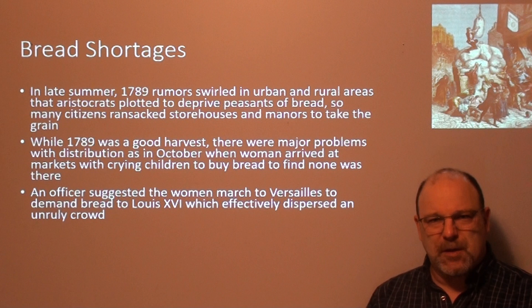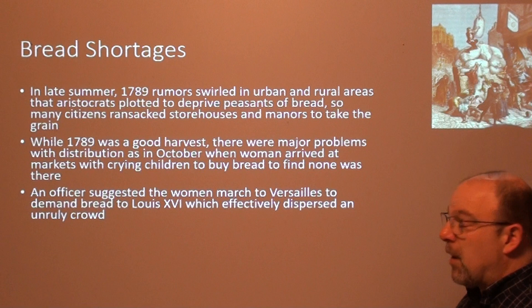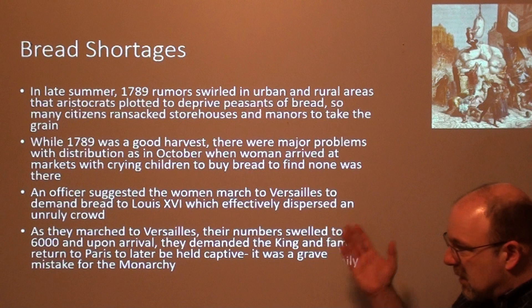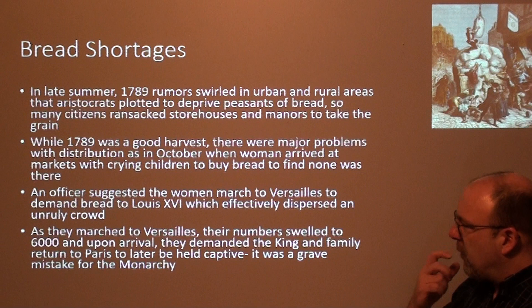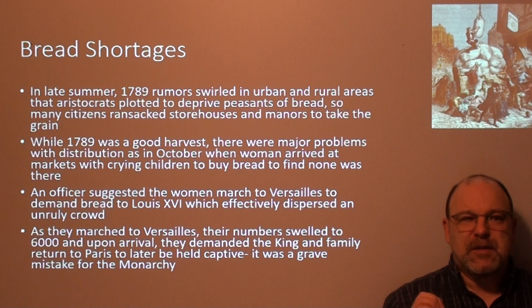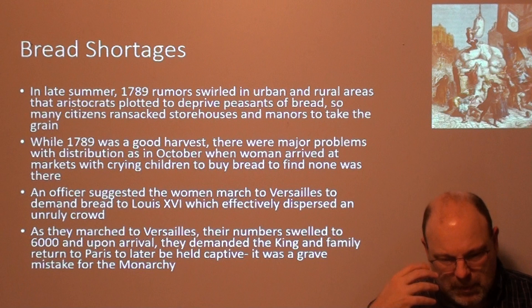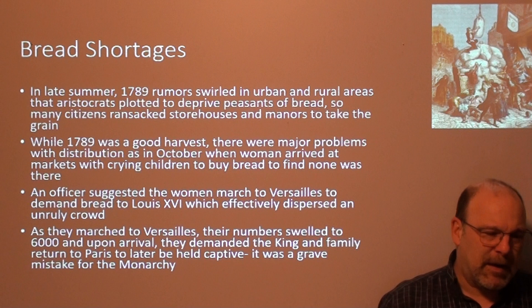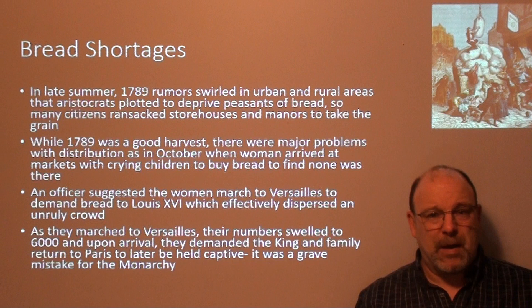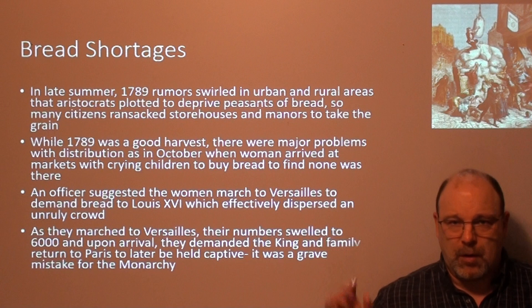By the time they got to Versailles, the crowd was pretty big and the monarchy was terrified of this unruly mob. As they marched to Versailles, their numbers swelled to roughly six thousand. Upon arrival, they demanded the king and his family return to Paris — where they would later be held captive. It was a grave mistake for the monarchy. Some of these women went into Versailles destroying and burning things, and I think the monarchy had absolutely no choice — once this mob said 'you are going to Paris,' they said okay.